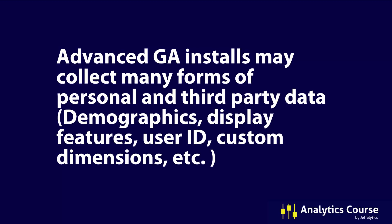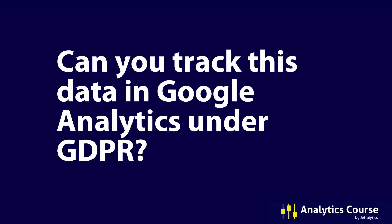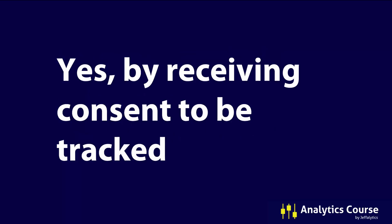Basically, anything beyond just collecting someone's IP address — which is all you collect in a basic standard install of Google Analytics — means you potentially need to get consent because you're collecting personal data. When that happens, you need some kind of notification or way of obtaining somebody's consent. So the question is: can you track this data in Google Analytics under GDPR? Yes, if you receive consent to be tracked.